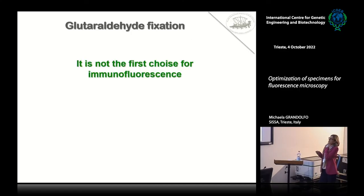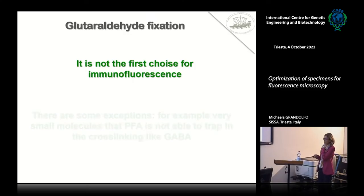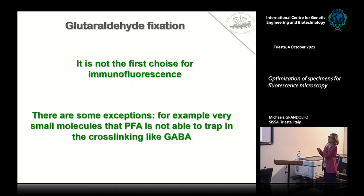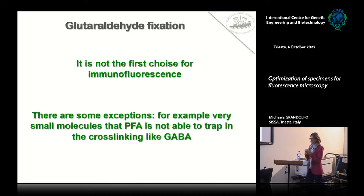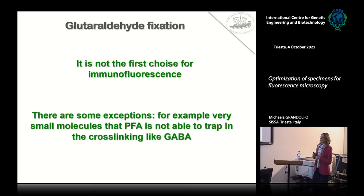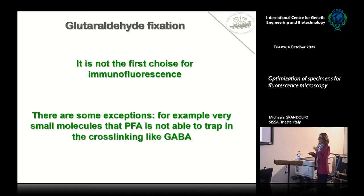Glutaraldehyde is not our first choice for immunofluorescence, but there are some exceptions. For example, if you need to see a very small molecule, you have to choose glutaraldehyde instead of paraformaldehyde, because paraformaldehyde — due to the two-dimensionality of its cross-linking — is not able to trap very small molecules, like for example GABA, if you need to see some GABAergic neurons.